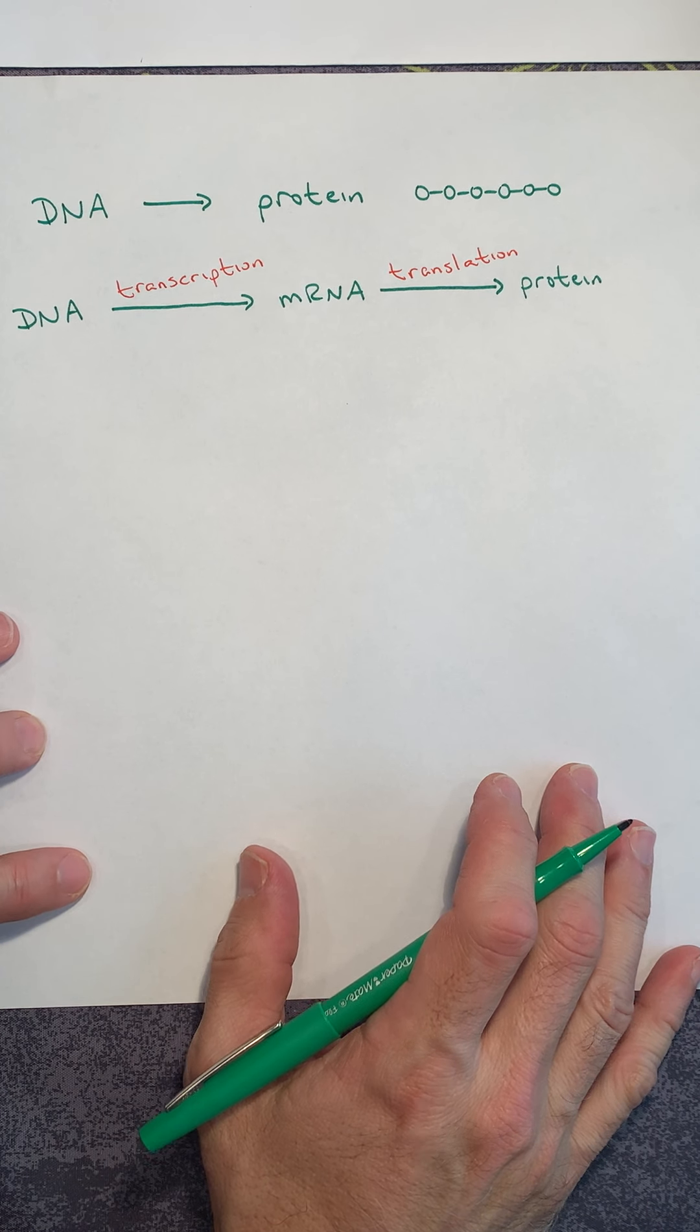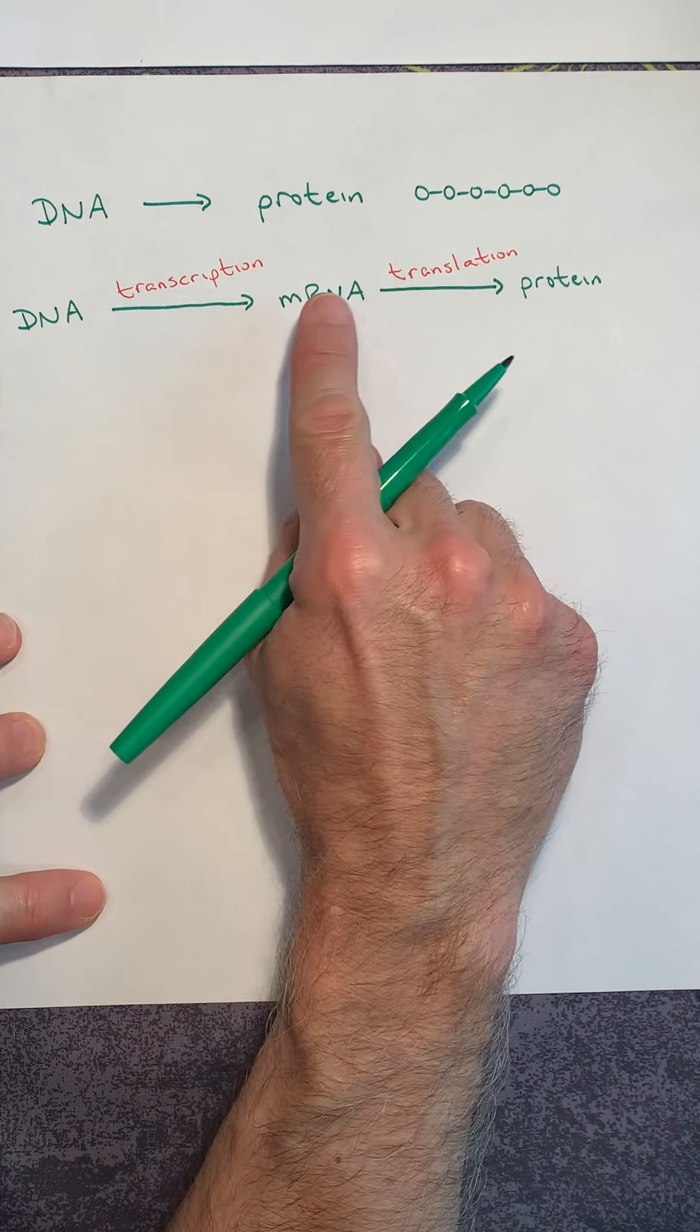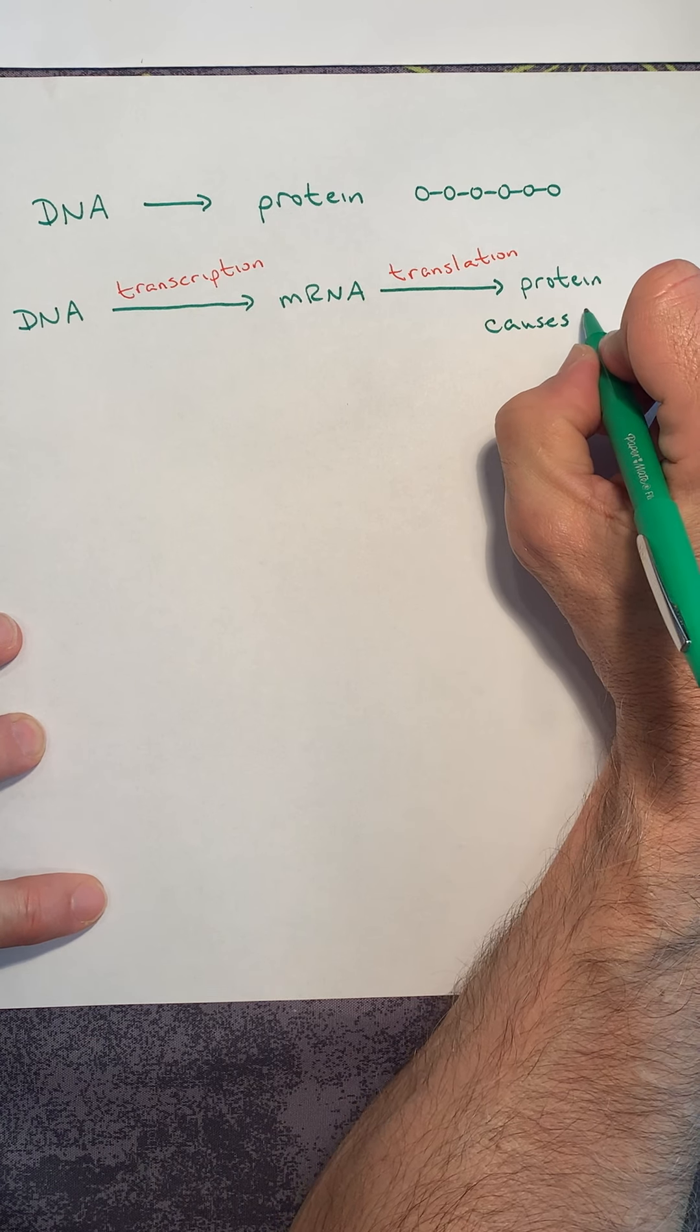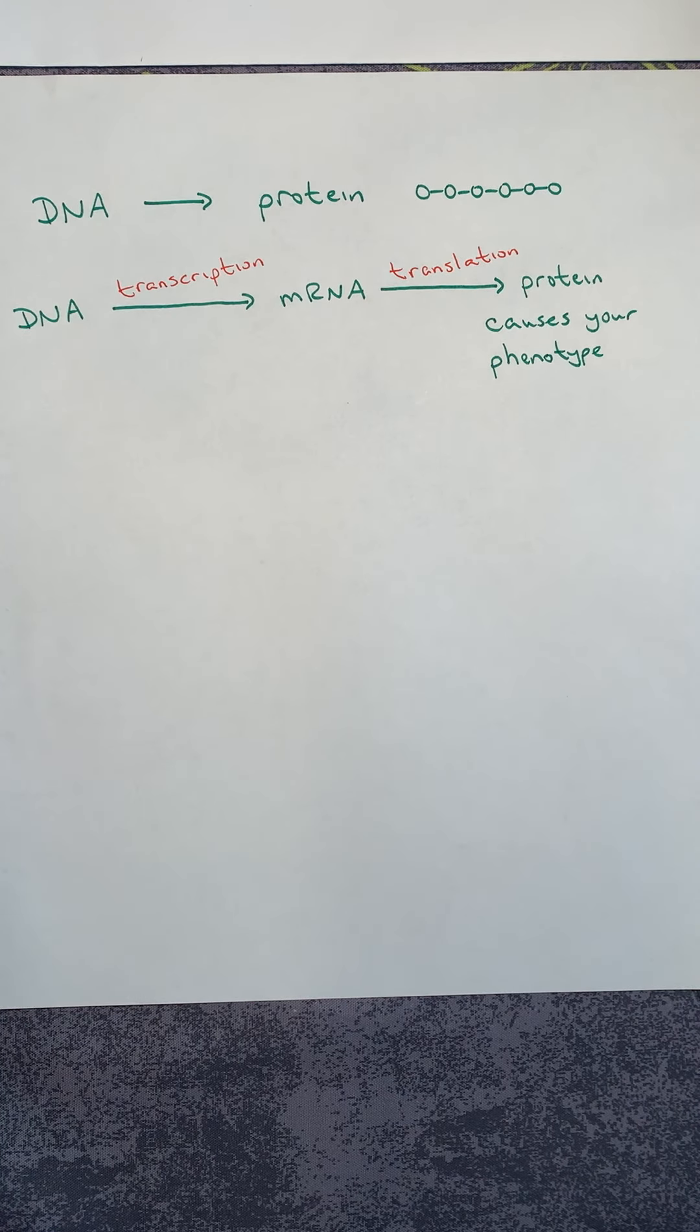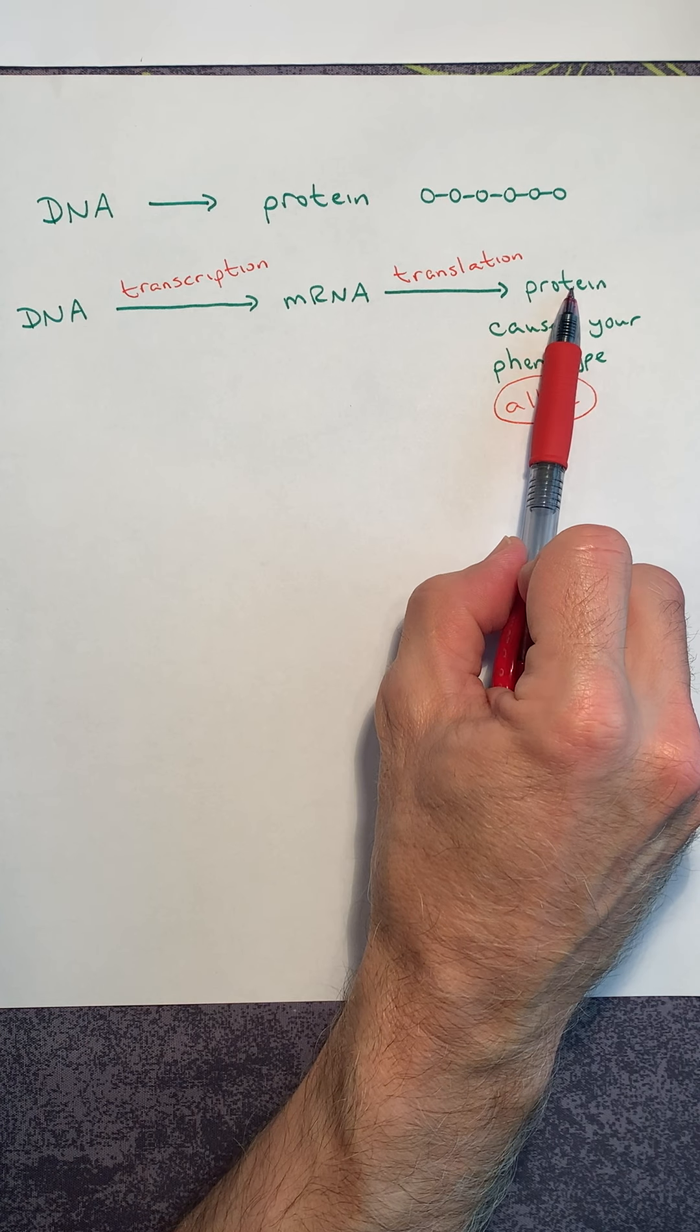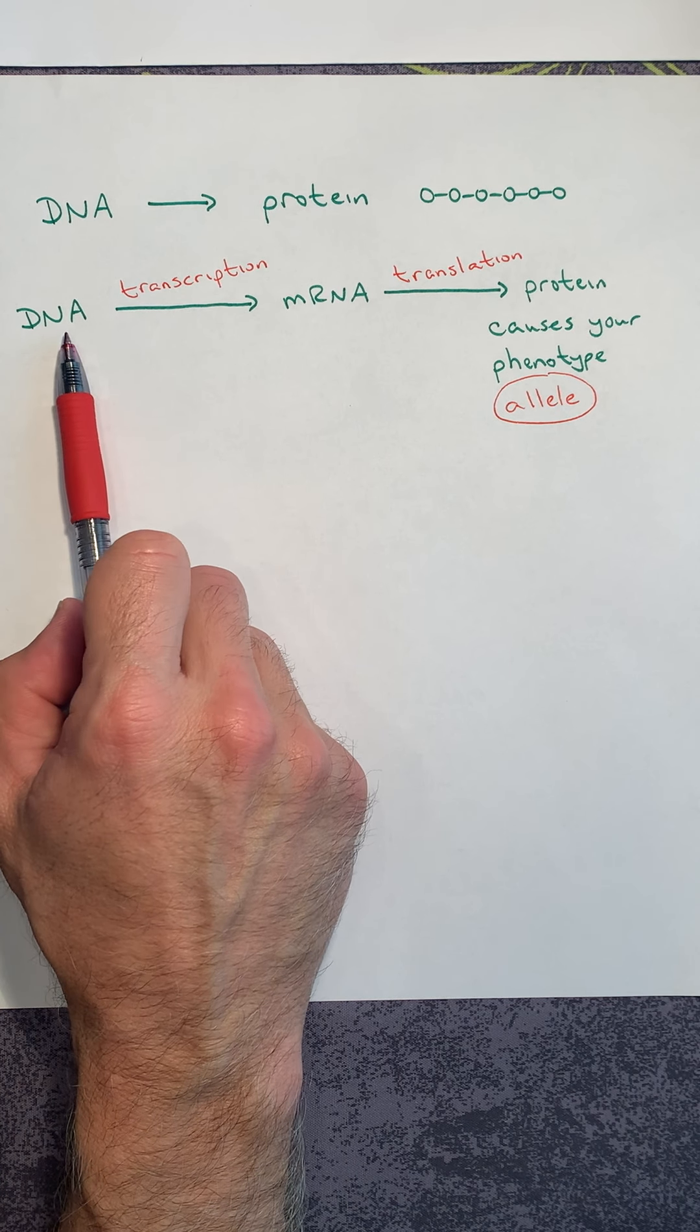So now that we're in genetics, we need to understand that this protein, when your cells read your DNA and produce your messenger RNA and make your proteins, causes your phenotype. This is what makes you what you are on the outside, what you are physically. And these different phenotypes are called alleles. Whether you have dark hair, light hair, brown eyes, blue eyes. These are all the different proteins that are caused based on which form of DNA you received from your biological parent.